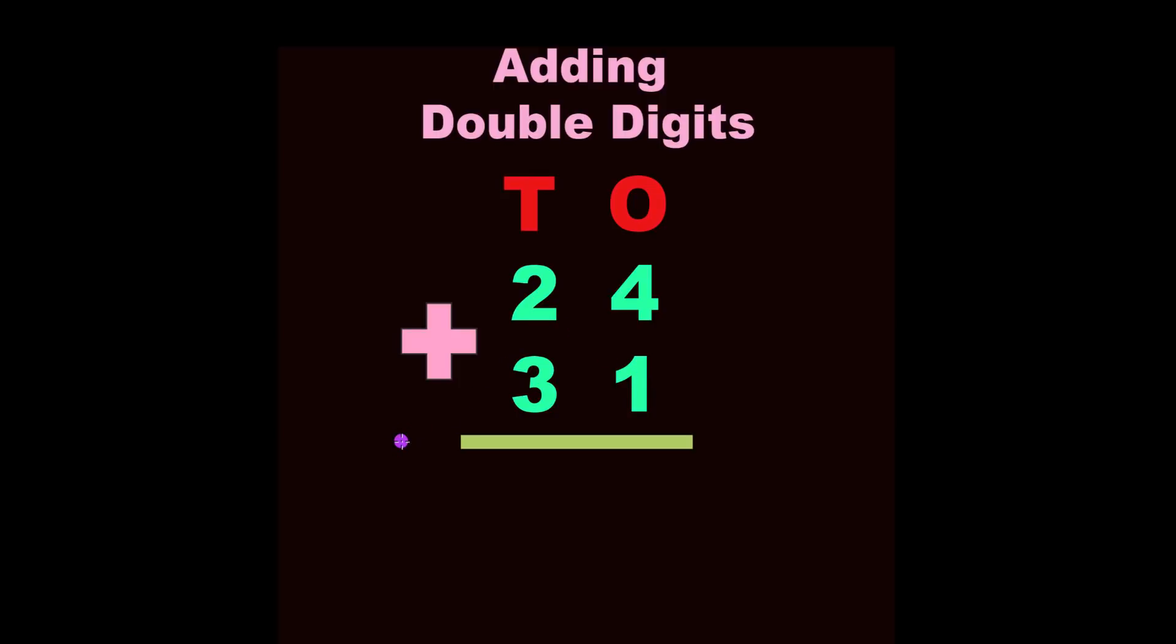Now great job. When you know the tens and ones, here's an easy way. I'm going to show you two ways to add double digits. You can add the tens separately and then you can place in the ones.